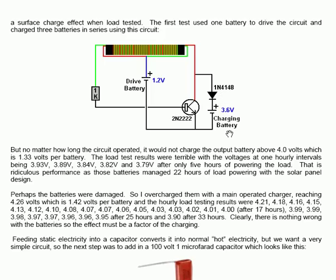But no matter how long I ran that circuit, it would not charge the output battery above 4.0 volts, which is 1.33 volts per battery. The load test results were terrible, with the voltages at one hourly intervals being 3.93V, 3.89V, 3.84V, 3.82V, 3.79V after only 5 hours of powering the load. That's ridiculous performance, as those batteries managed 22 hours of load powering with the solar panel design. Perhaps the batteries were damaged.